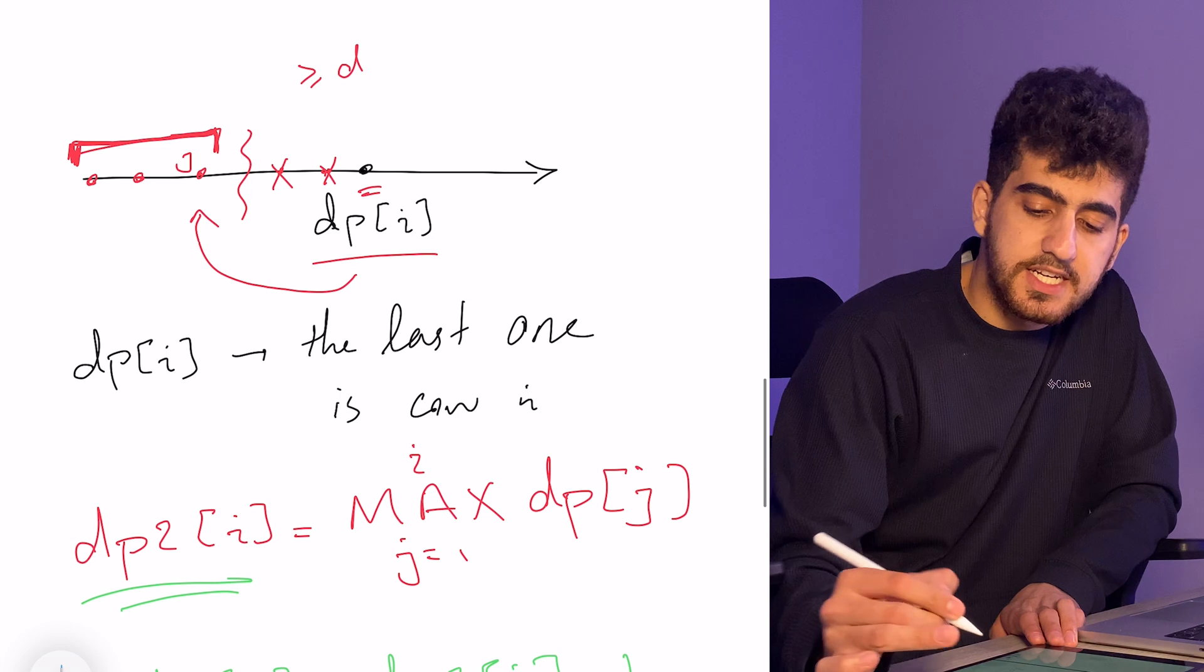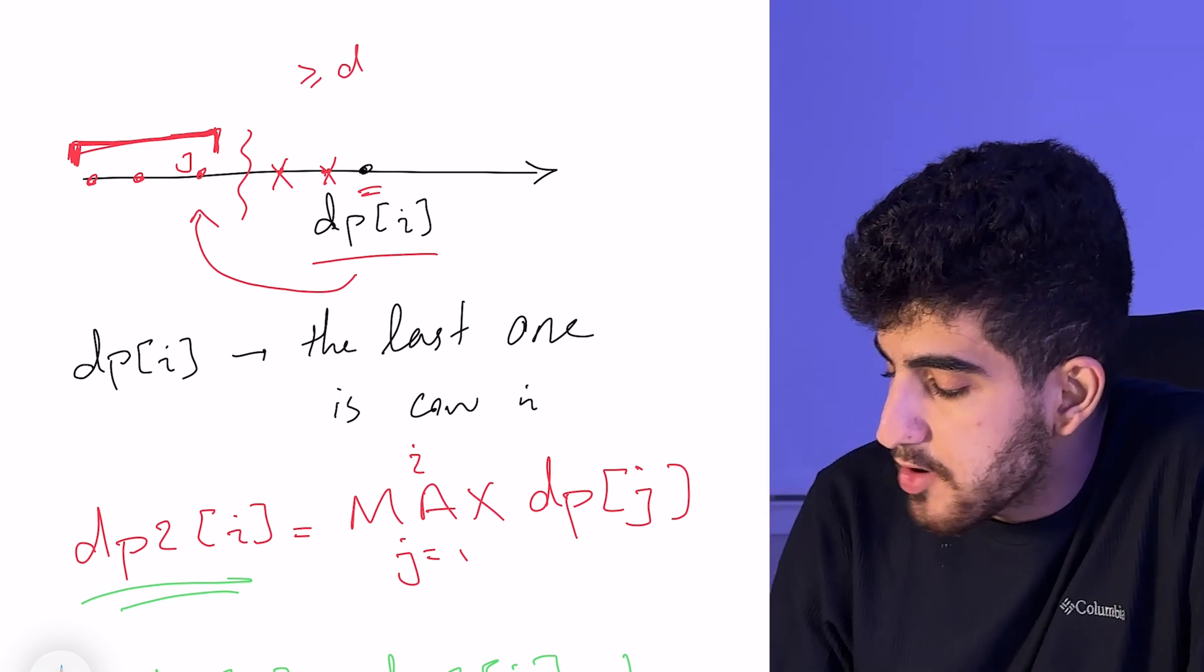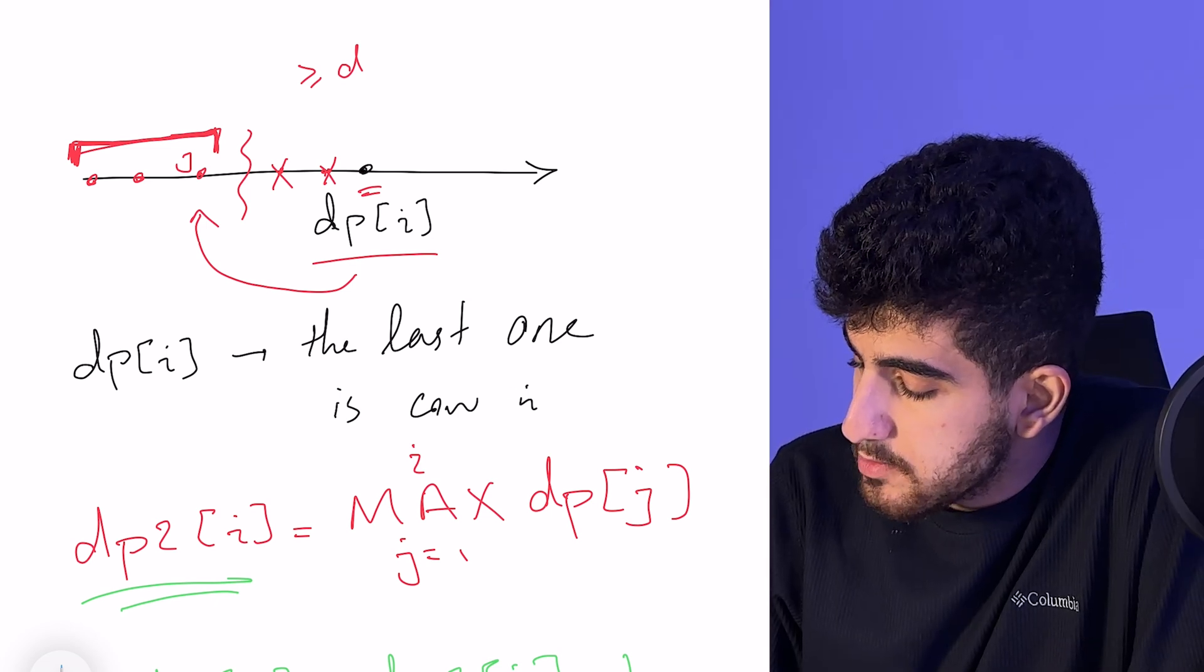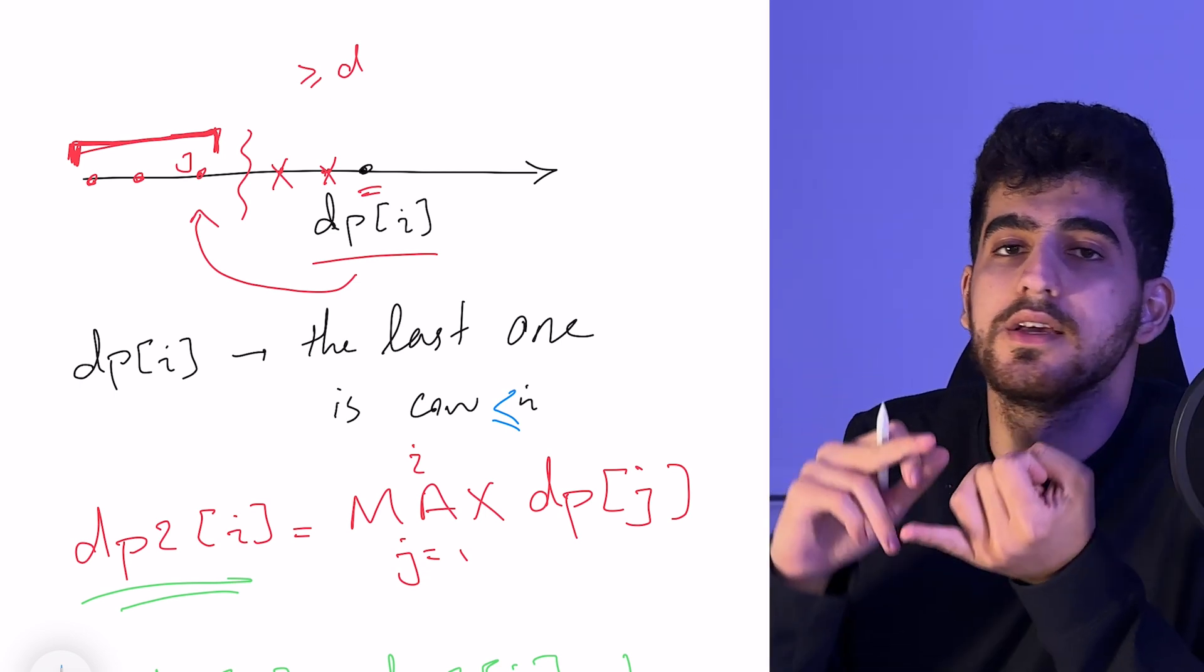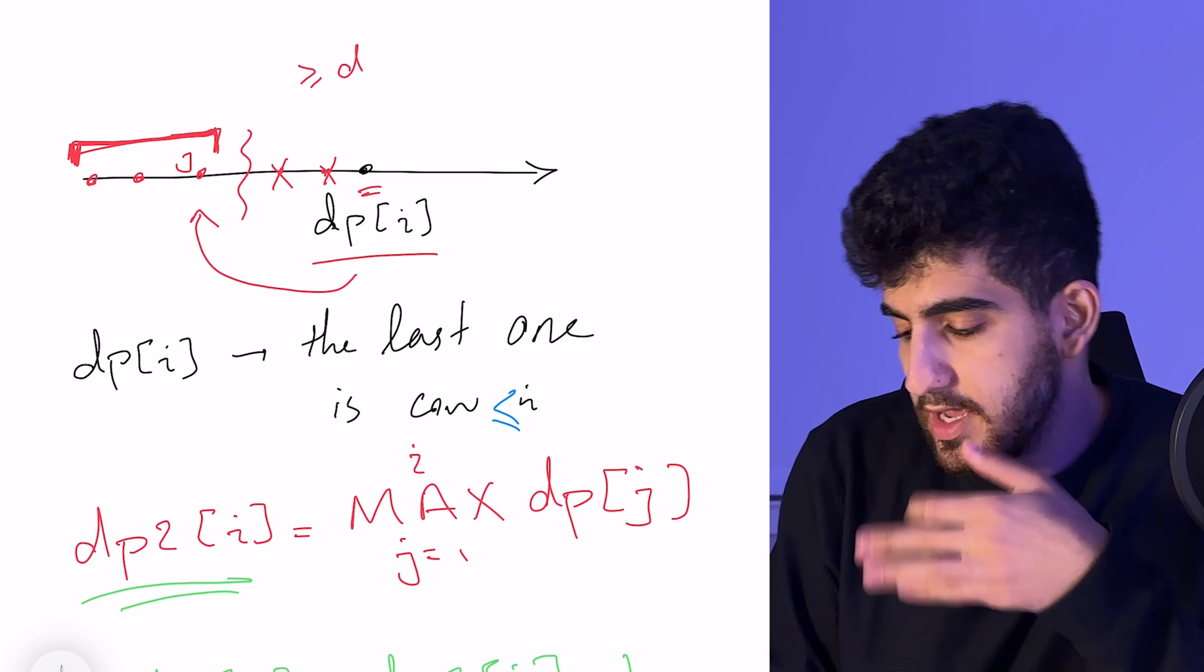This changes our definition. Instead of the last one is cow number i, now the last cow is the cow number less than or equal to i. The last cow can be cow number 1, it can be cow number 2, and it can be cow number 3 also.